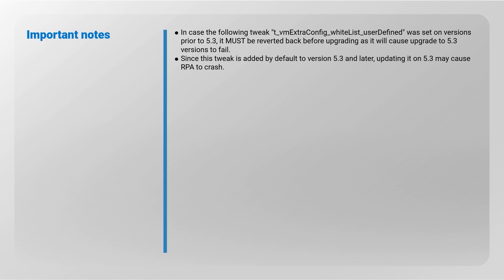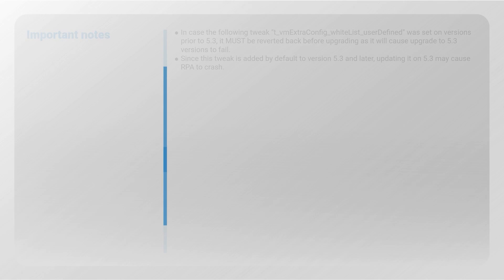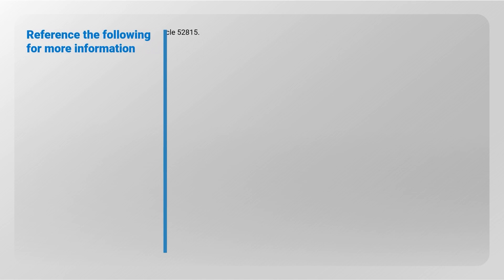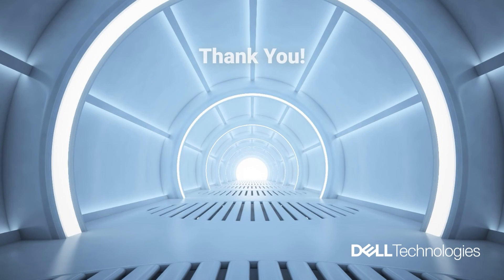Important Notes: In case the following tweak was set on versions prior to 5.3, it must be reverted back before upgrading, as it will cause upgrade to 5.3 versions to fail. Since this tweak is added by default to version 5.3 and later, updating it on 5.3 may cause RPA to crash. Reference VMware KB Article 52815. Thank you for watching.